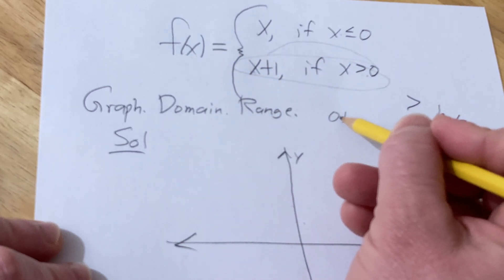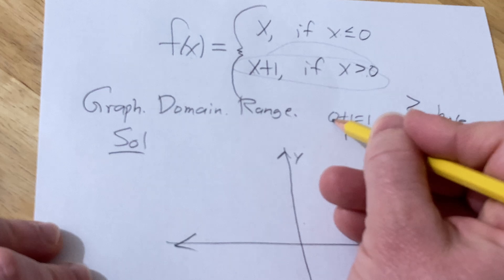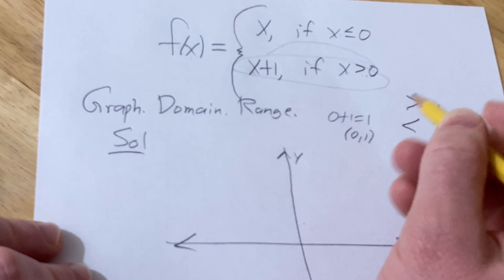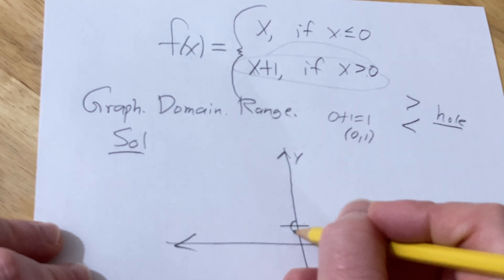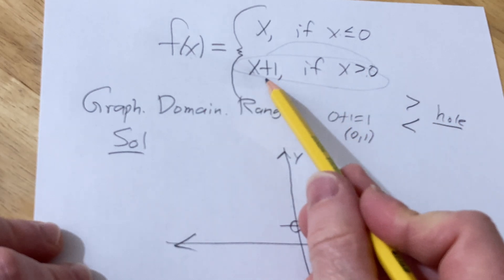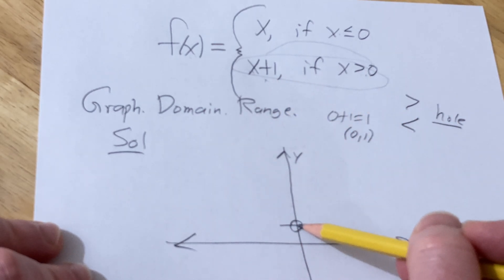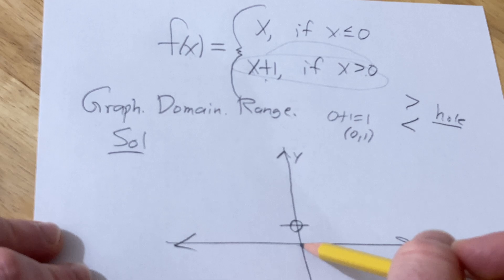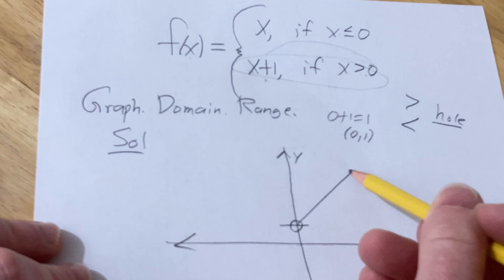So this is zero plus one equals one. So there's a hole when x is zero and y is one. So there's a hole right here. And then x plus one is a line with the positive slope, so it's going to go up like this.